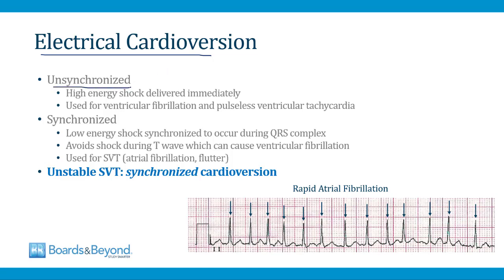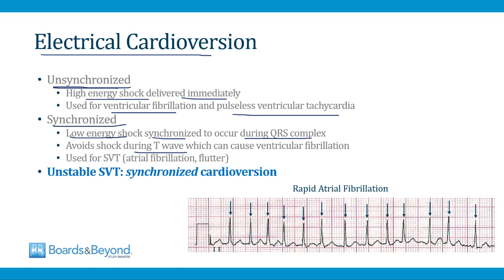Electrical cardioversion is the delivery of electricity to the heart to try to terminate a pathologic rhythm and restore sinus rhythm, and there are two ways this can be done: unsynchronized and synchronized. Unsynchronized cardioversion, also called defibrillation, involves delivery of a high-energy shock immediately when you press the buttons on the machine. This is used for life-threatening arrhythmias like ventricular fibrillation or pulseless ventricular tachycardia, where you want to deliver a high-energy shock right away without any delay.